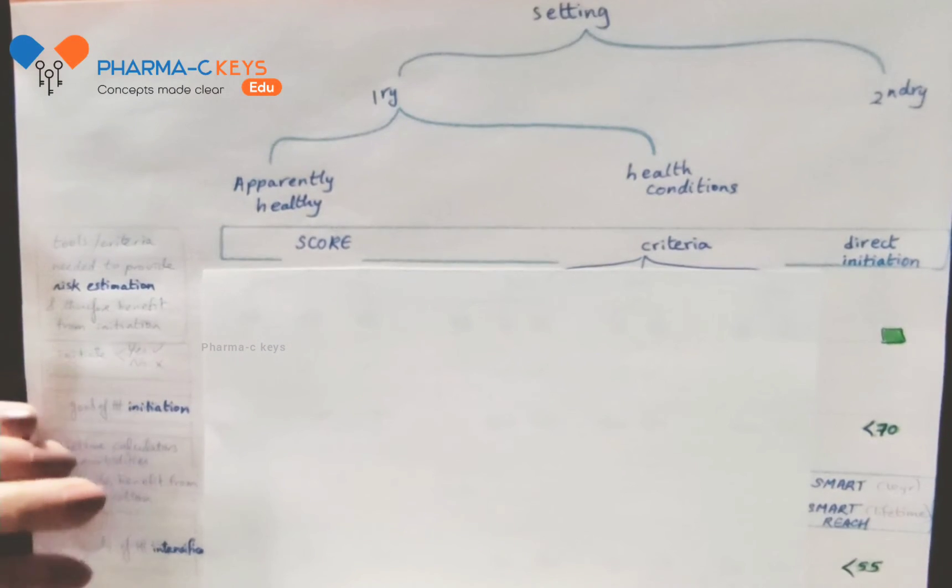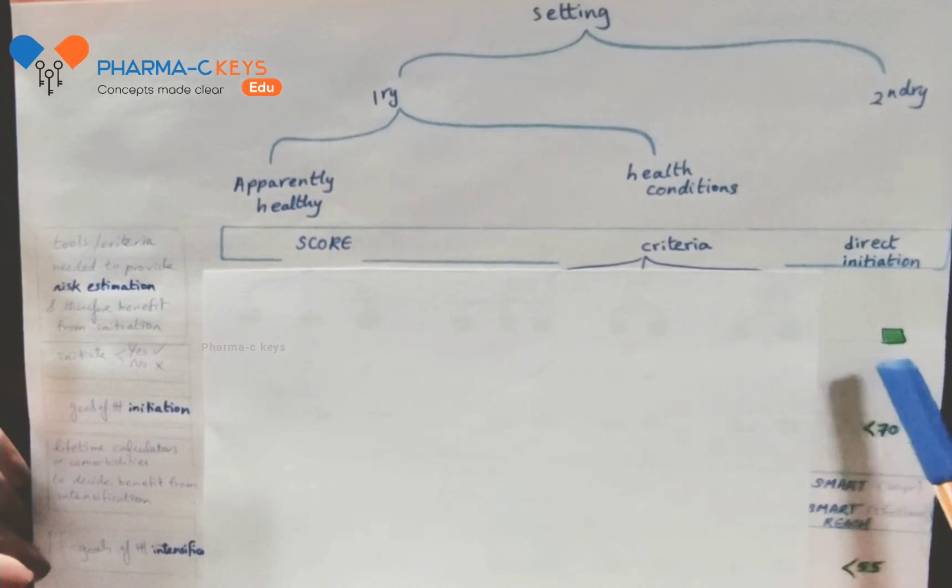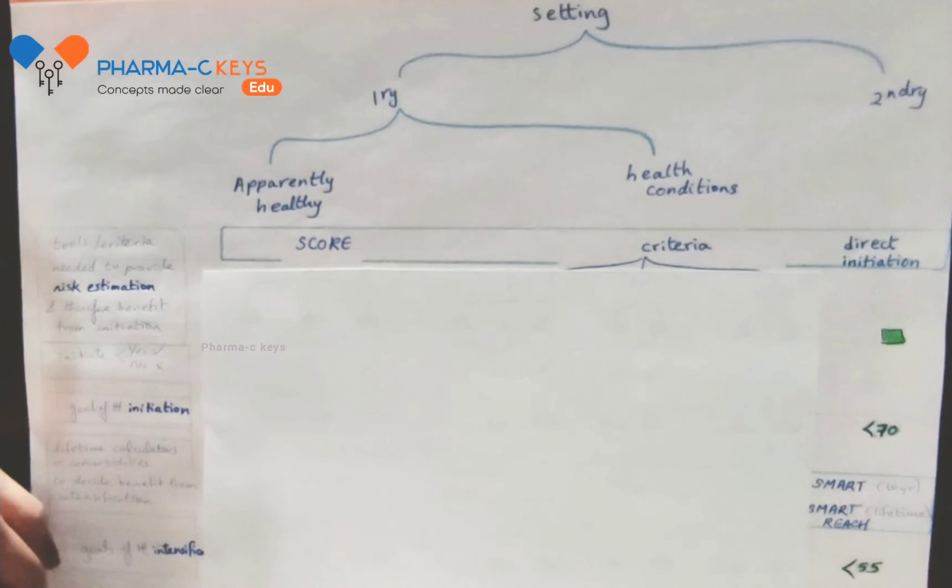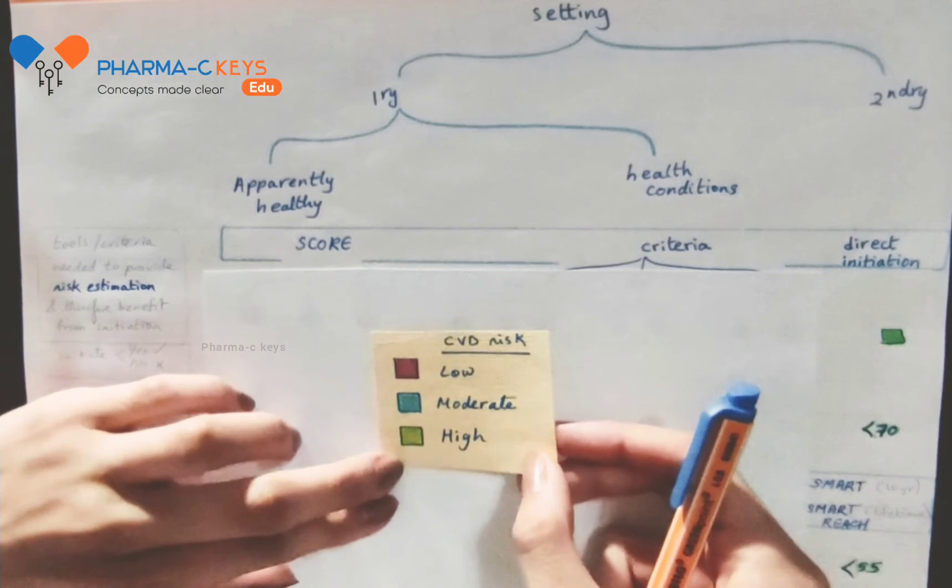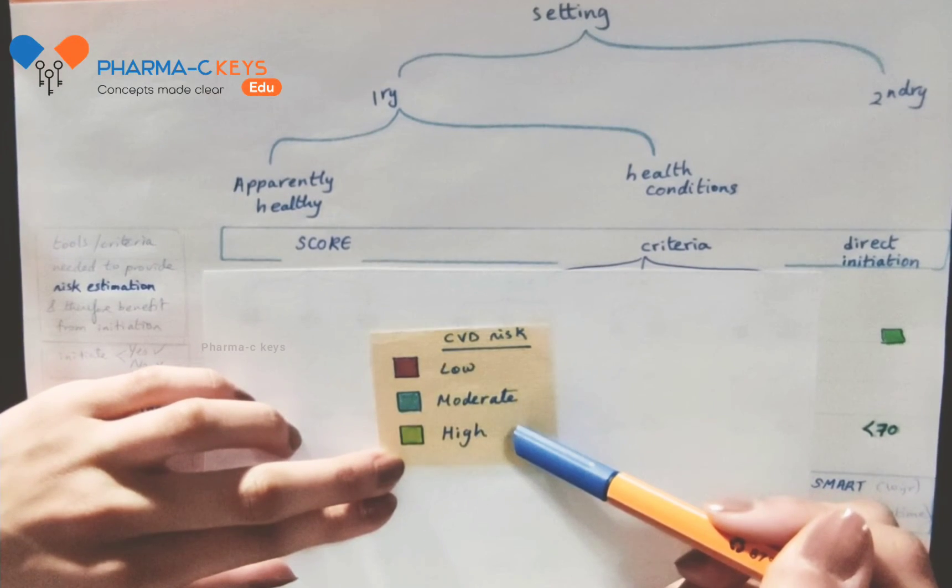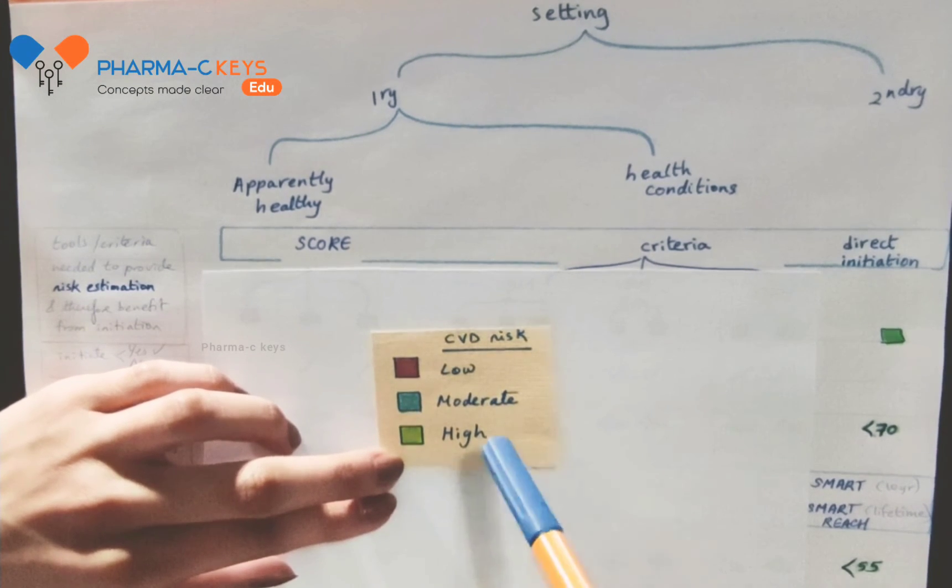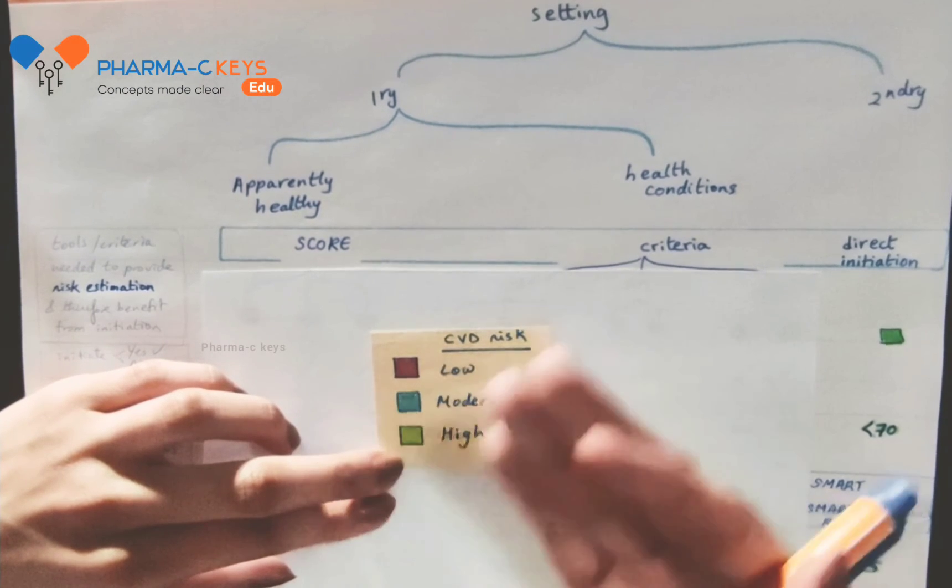Unlike secondary prevention patients who are at very high risk of cardiovascular disease recurrence, patients in the primary prevention settings are at various levels of cardiovascular disease risk. And therefore, risk estimation tools or criteria are needed to classify the patient's level of cardiovascular risk in order to determine the treatment goals.